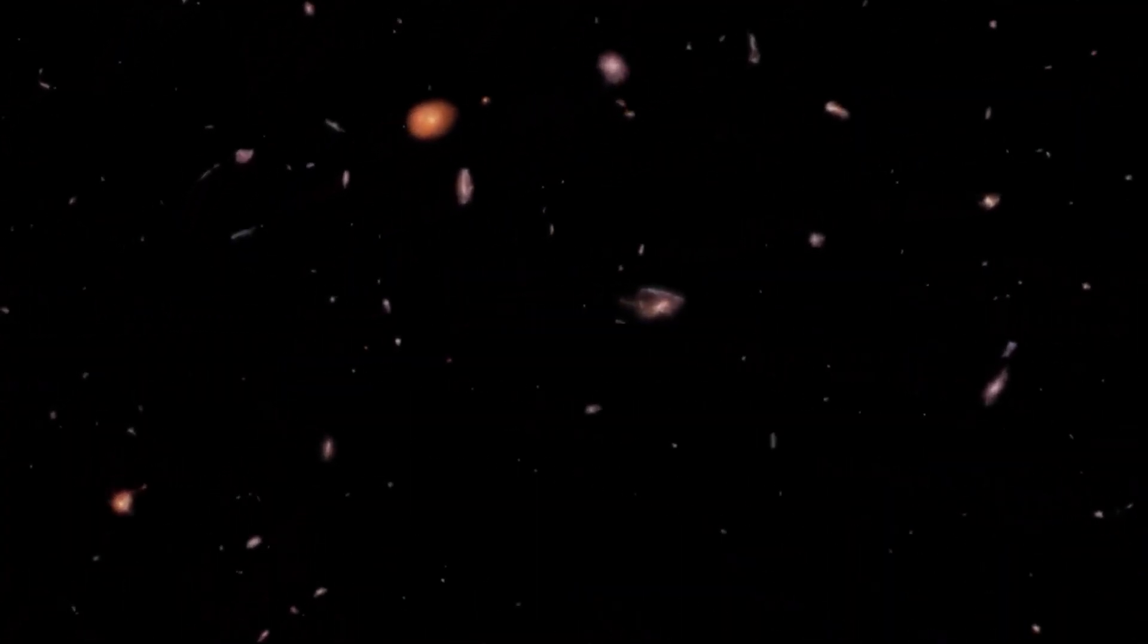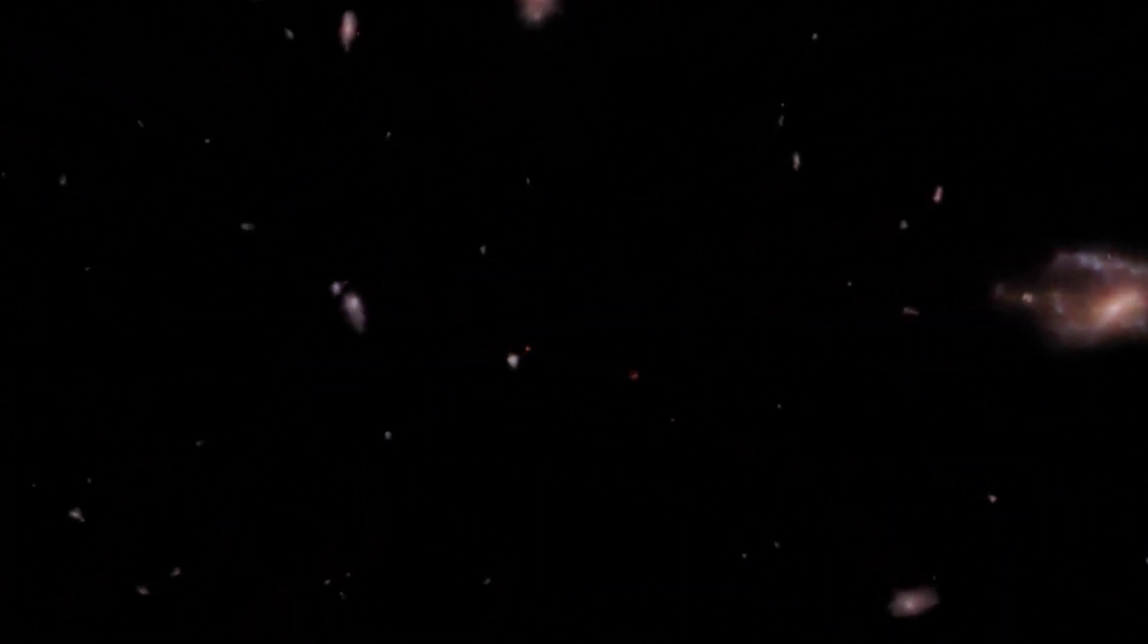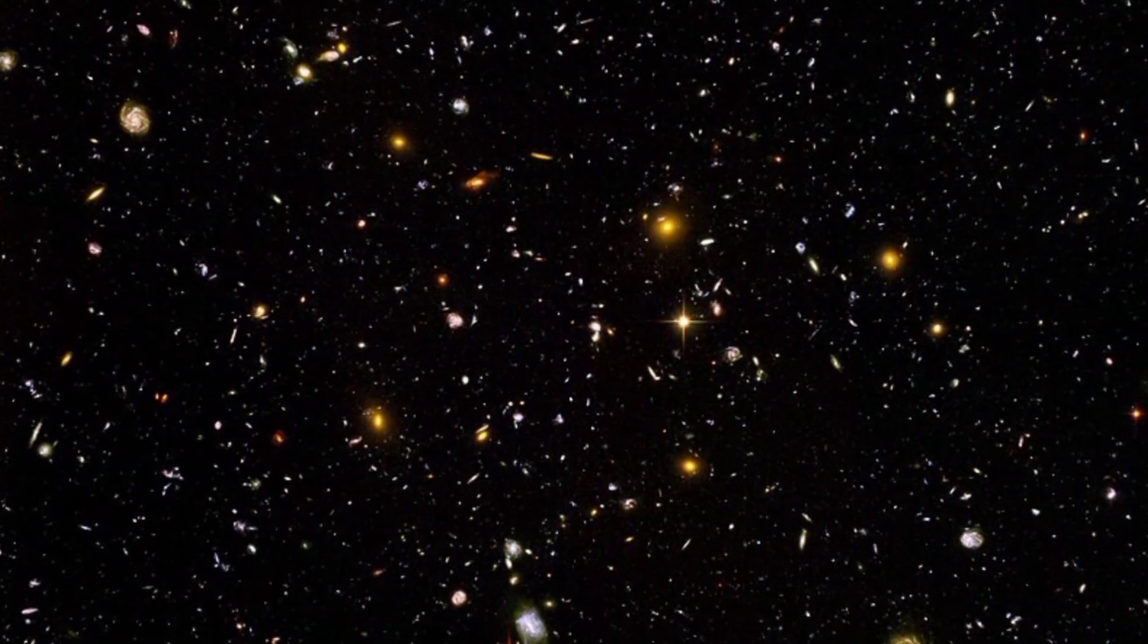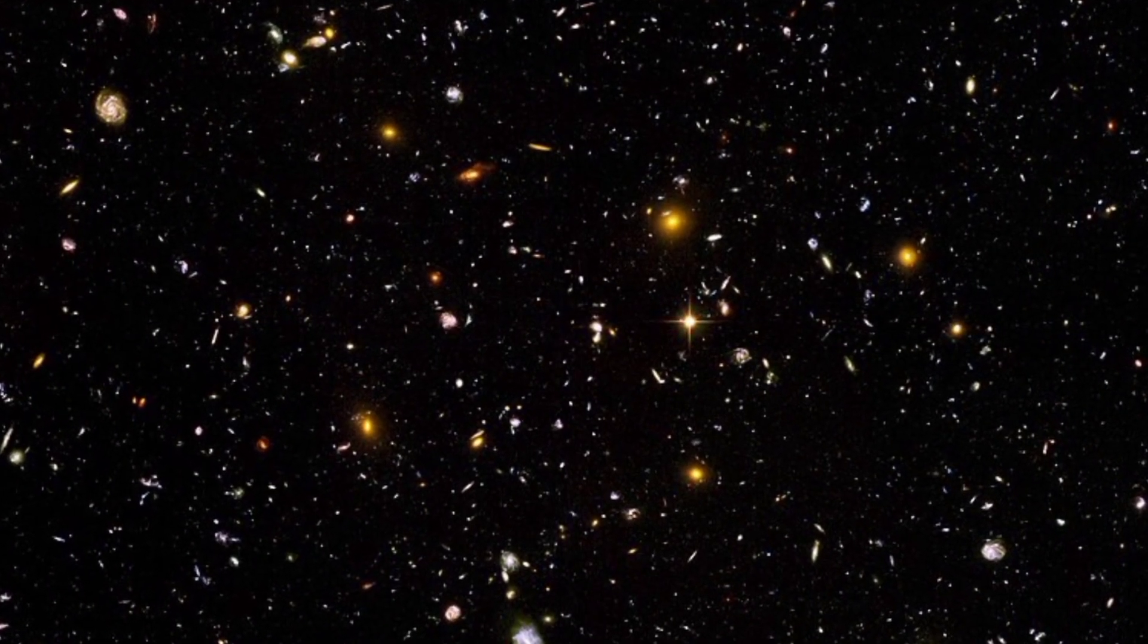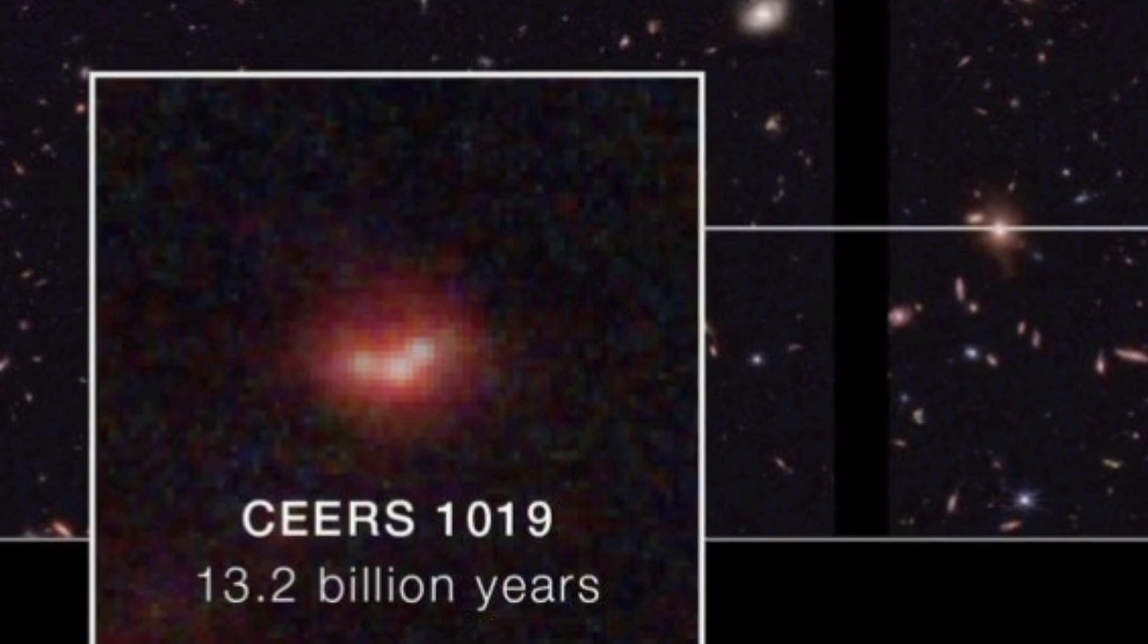This black hole was hiding in one of the first galaxies we ever spotted. Originally we called it EGSY-8P7, but now we call it Sears-1019.